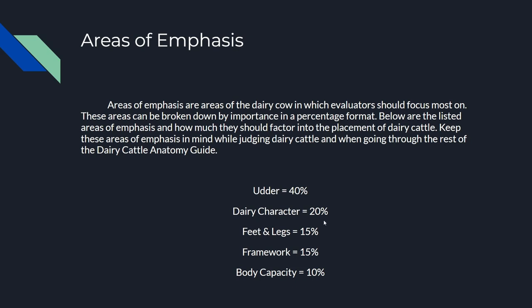We have dairy character at 20 percent — we'll talk about what that is. Then feet and legs at 15 percent, which is fairly obvious since the cow needs to walk properly, though there are other reasons we'll discuss. Framework is listed as a separate section from feet and legs — unlike beef cattle, goats, sheep, and pigs where we discuss them together. In dairy cattle we talk about them separately, but both have equal importance at 15 percent. Finally, body capacity comes in at 10 percent.